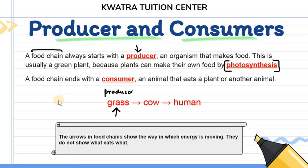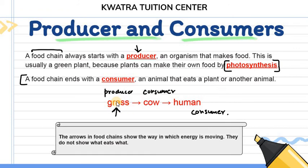The next thing is consumer. अगर grass को कोई consume कर रहा है, तो उसको हम consumer बोलेंगे। Food chain ends with a consumer — starts with a producer, ends with a consumer। Human भी consumer है। यहाँ producer grass है, grass is being consumed by cow, cow is being consumed by human — so यहाँ consumer human है। The arrows shown here indicate how energy is being transferred: grass to cow, then cow to human.